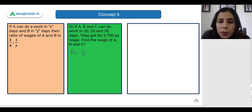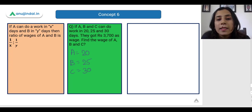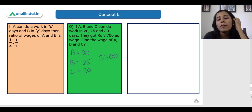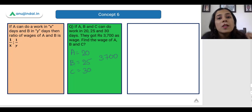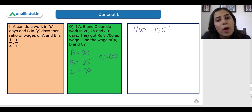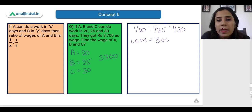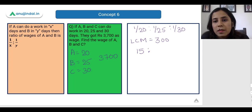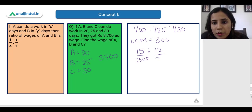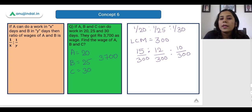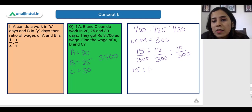A takes 20 days, B takes 25 days, C takes 30 days, and together they receive a total wage of 3700. The ratio of their wages is 1/20 : 1/25 : 1/30. The LCM of 20, 25, and 30 is 300. So the ratio becomes 15/300 : 12/300 : 10/300, which simplifies to 15 : 12 : 10.